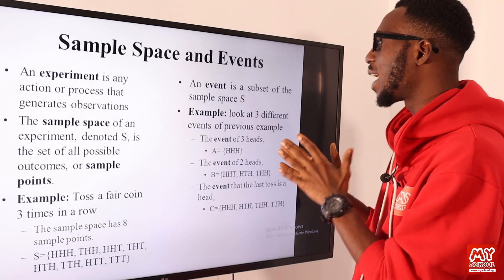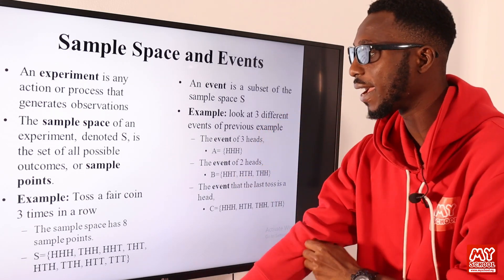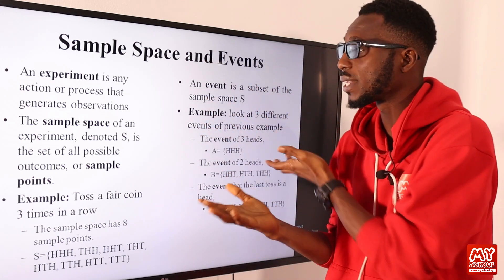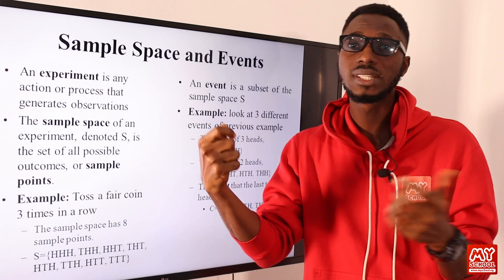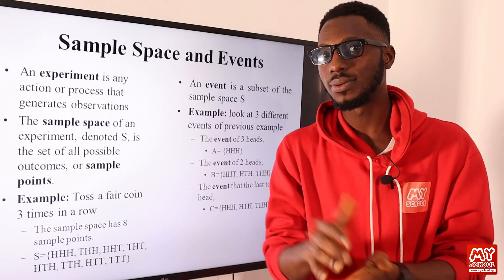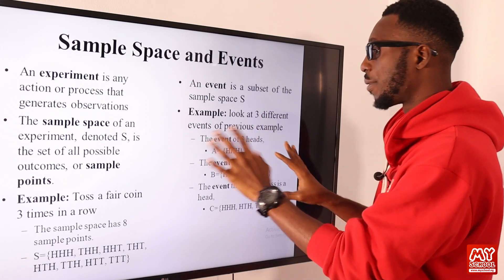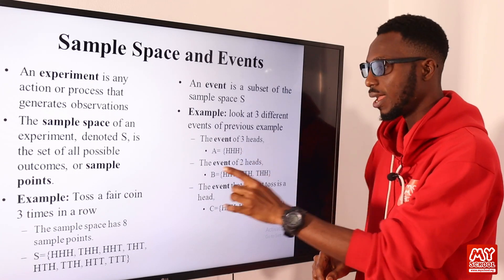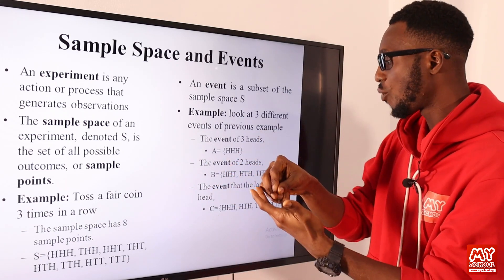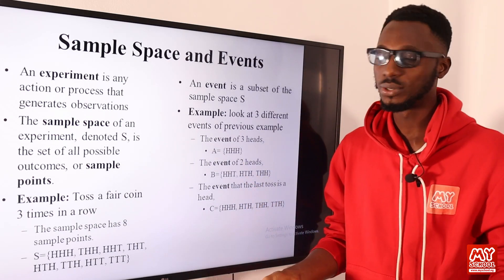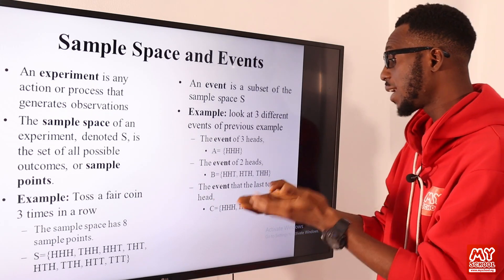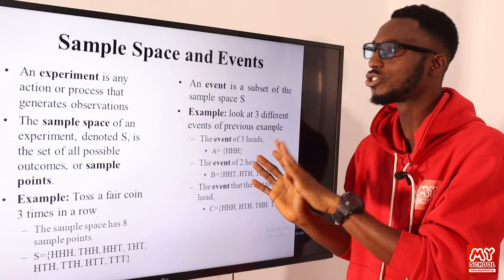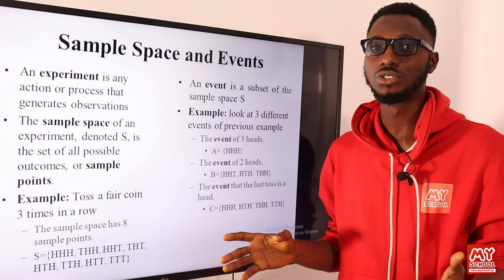What is an event? An event is a subset of the sample space. So if I toss a coin, my event from the sample space can just be getting a head. For example, what is the event that I have three heads? That is head, head, head. What is the event of two heads? That is head, head, tail or head, tail, head. The event that the last toss is a head contains outcomes ending in a head. So an event is just a subset of your sample space.